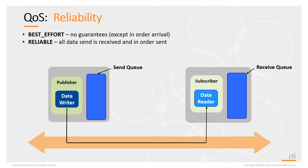However, any data that does arrive at the data reader will definitely arrive in order — you'll never get data out of order. If you want a connection between a data writer and data reader to be reliable, you would use the reliability QoS to configure that.